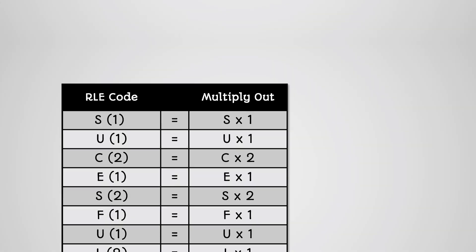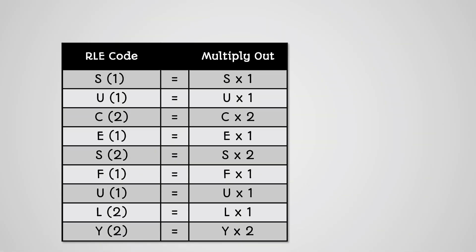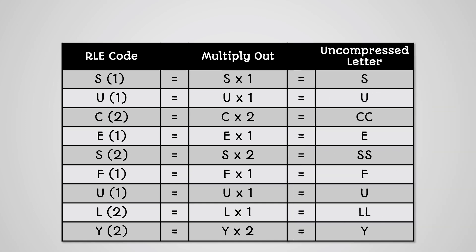To get back to the original word, we simply multiply the letter by the frequency. If you then add all the letters in the last column together, you get back to the original word successfully.